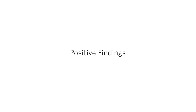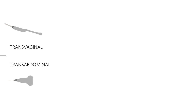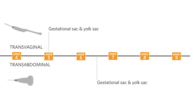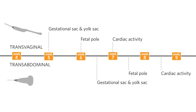Findings on ultrasound that indicate an intrauterine pregnancy vary with gestational age. The first sign of definitive pregnancy is the gestational sac and yolk sac, which can be visualized at around five weeks on transvaginal scanning and about six to seven weeks on transabdominal scanning. The fetal pole is seen about one week later — at six weeks by transvaginal and seven to eight weeks by transabdominal scan — and cardiac activity is seen shortly thereafter.